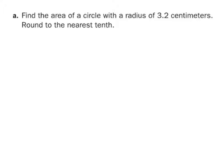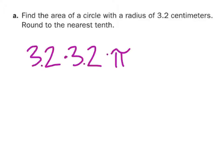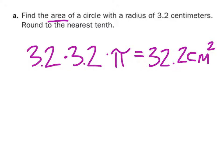Let's find the area of a circle with a radius of 3.2 centimeters. We calculate 3.2 times 3.2 times pi — that is, the radius times the radius times pi — which gives us 32.2 centimeters. Again, this is area and two-dimensional, so we have centimeters and centimeters, meaning the units are centimeters squared.